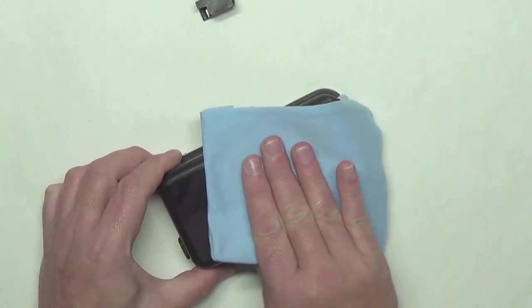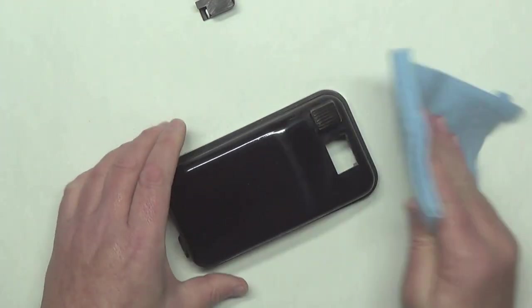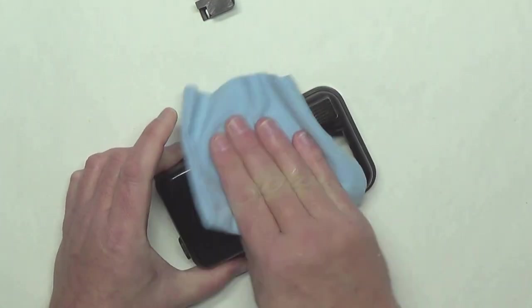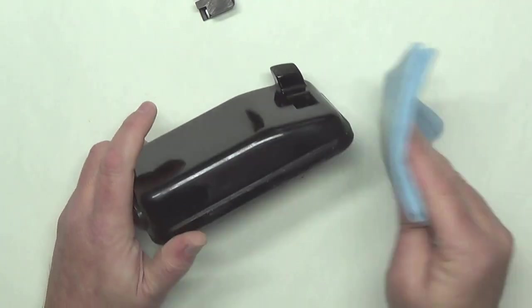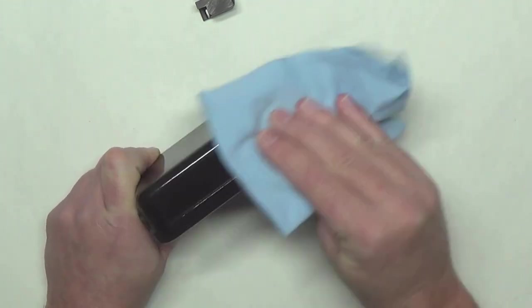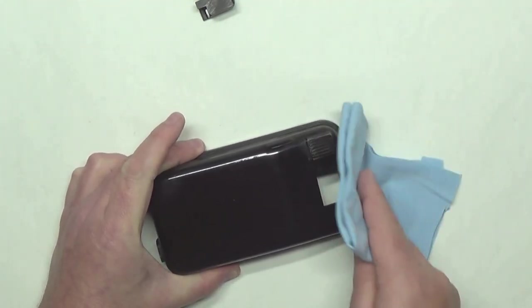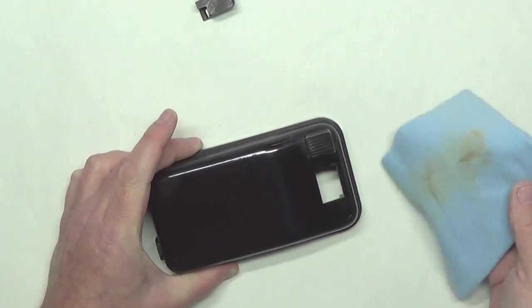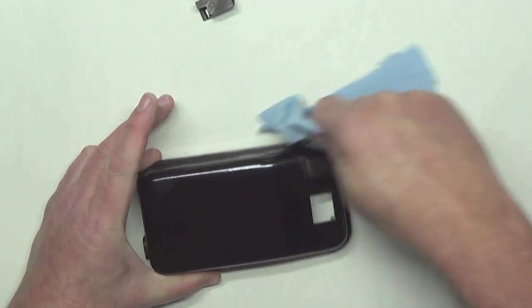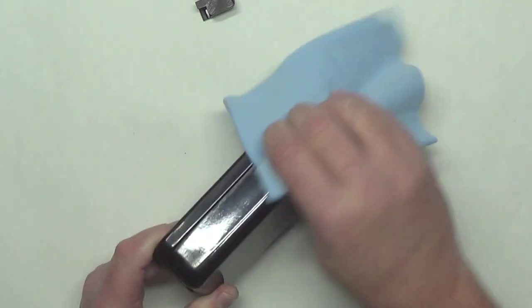Allow the Brasso to dry to a fine haze before buffing off with a clean soft cloth. The more you buff the better it'll look. If you're not happy with the result, just repeat the process for a higher shine.